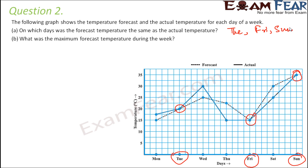What was the maximum forecast temperature during the week? The forecast temperature is given by the dotted line. Looking at all values, the highest point corresponds to 35 degrees Celsius, so 35°C is the maximum forecast temperature during the week.